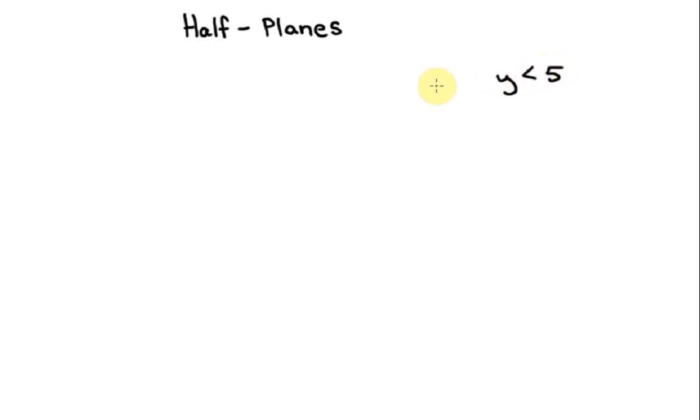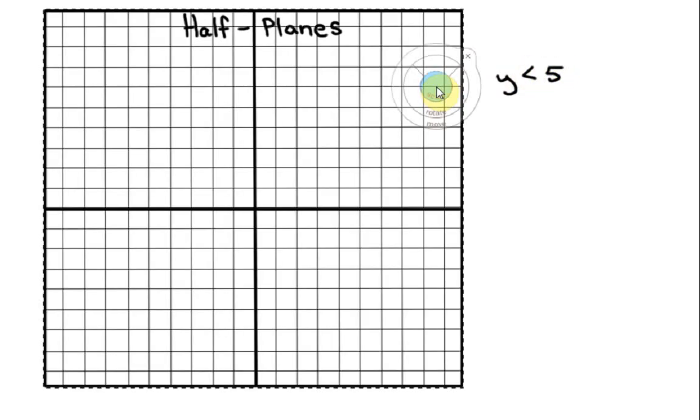Okay, so I'm just going to pull up the grid here and there it is. And what do we mean when we say half planes? Well, this whole grid is a plane and so we're basically going to cut it in half.